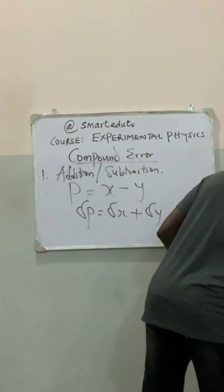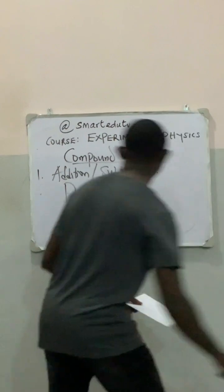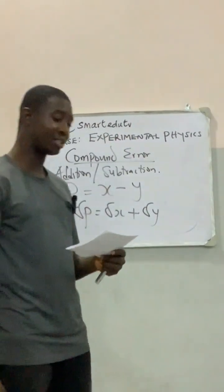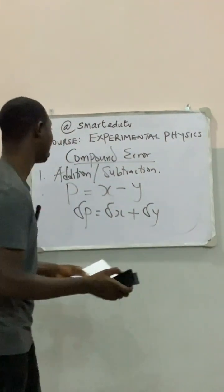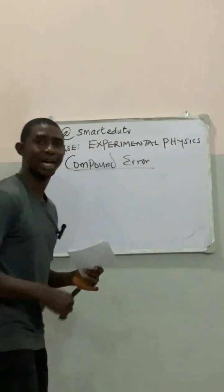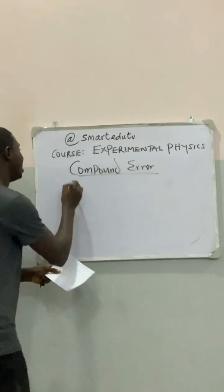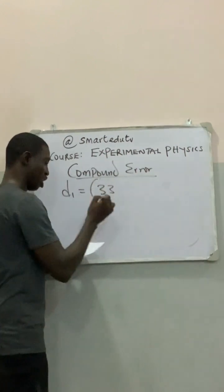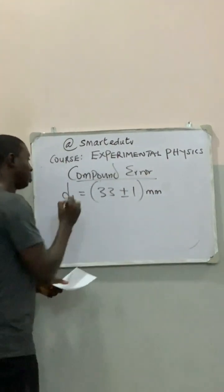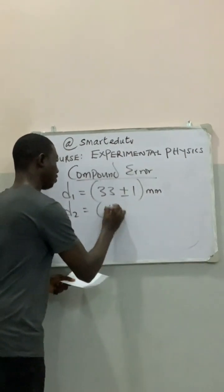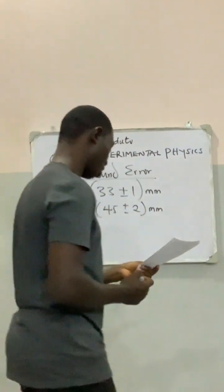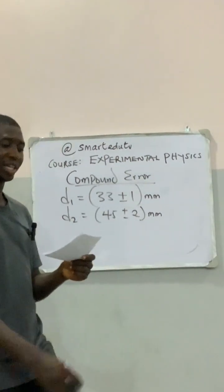Let's look at an example. The internal and external diameter of a metal pipe are defined as D1 equals 33 ± 1 millimeters and D2 equals 45 ± 2 millimeters. From these values, we are going to calculate the percentage error in the thickness of the pipe.